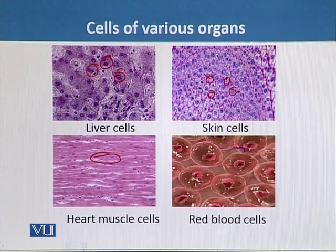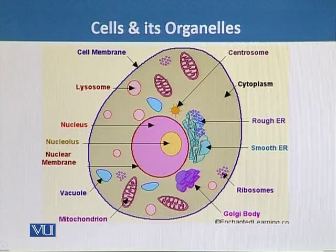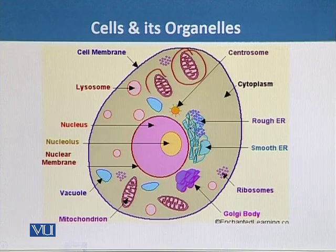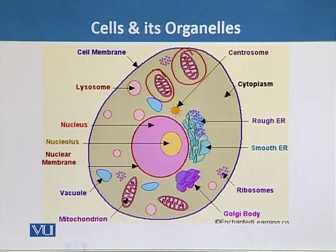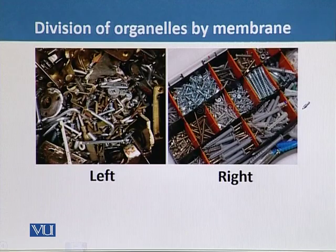Here is the general structure and the organelles of the cell. Just as the human body is composed of many specialized systems, the cell is also composed of many specialized organelles. These different organelles perform their specialized functions.